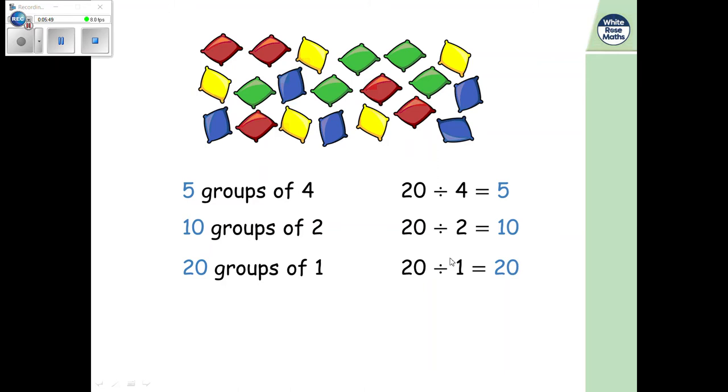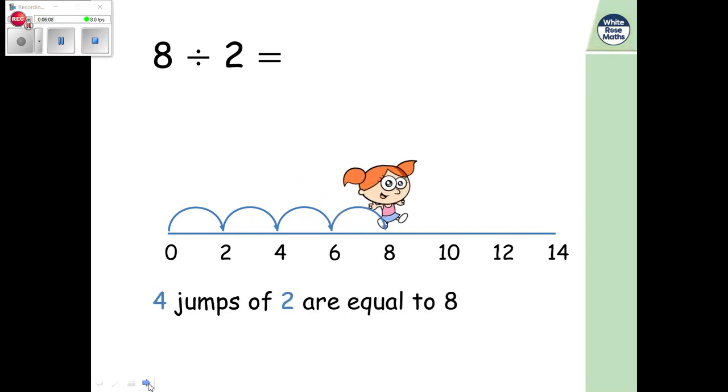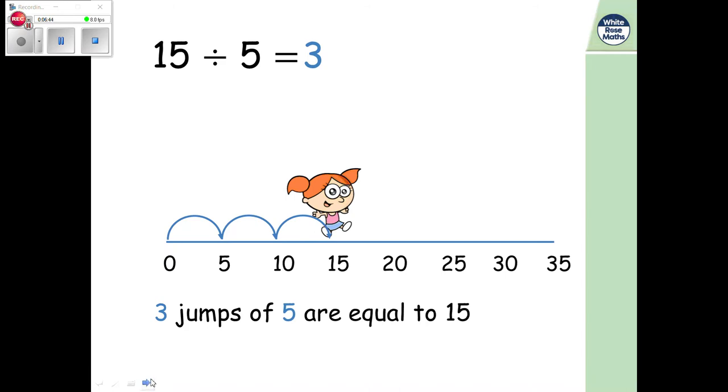So I hope you're feeling a little bit more confident about using your language of groups of and using the divided sign as well. So let's move on. So eight divided by two. So she's jumping in groups of two all the way until she gets to eight. So she's done four jumps of two are equal to eight. So this is how your two times tables can help you when you're doing some divided questions as well. So eight divided by two equals four because she's done one, two, three, four jumps. Again, here's your five times table. So 15 divided by five. So let's count on our fives. Five, 10, 15. She's done three jumps and that is your answer there. So three jumps of five are equal to 15.